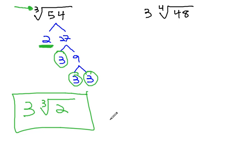Let's try another example. In the second example, we have 3 times the fourth root of 48. And again, nothing to the fourth power comes out to 48, so let's find the prime factorization.